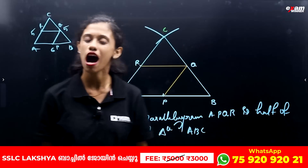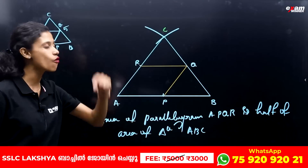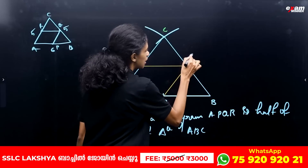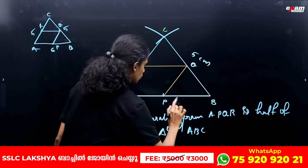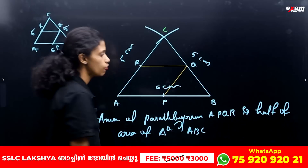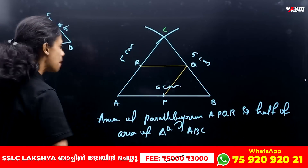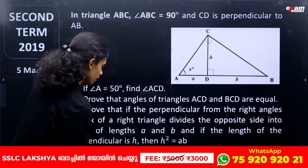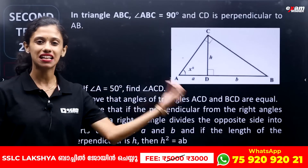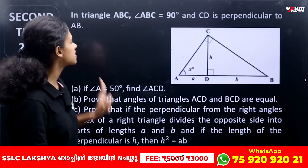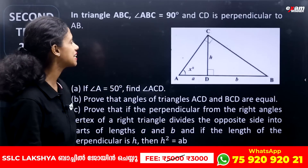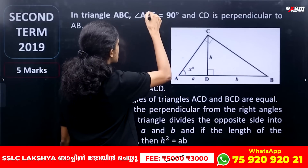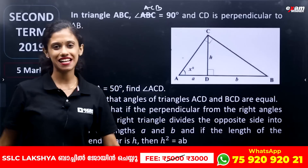Parallelogram BPQR is half of the area of triangle ABC. The full mark sides are 5 cm, 5 cm, and 6 cm. The parallelogram area is 6 square centimeters and the triangle area is 12 square centimeters. Now, triangle ABC has angle ACB equal to 90 degrees.